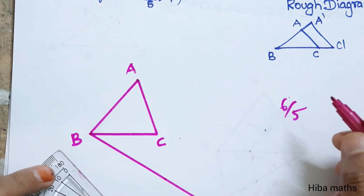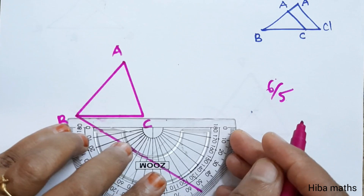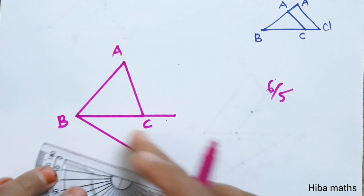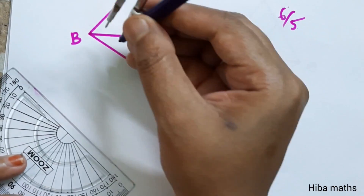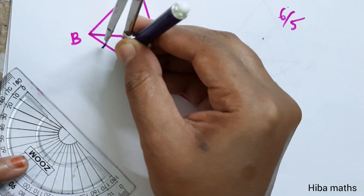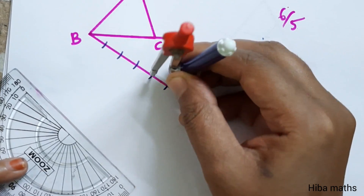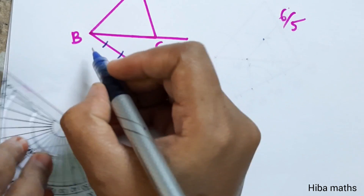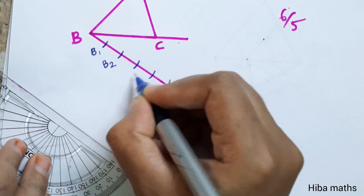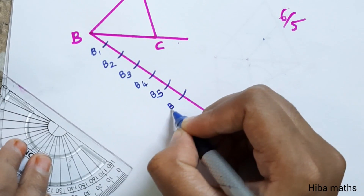Since the scale factor is 6/5, we need 6 divisions. We mark 6 divisions using the compass: B1, B2, B3, B4, B5, B6.